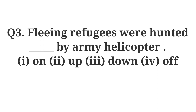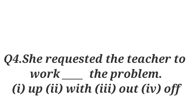Question number three: The fleeing refugees were hunted dash by army helicopters. Options are: on, up, down, off. You should do the test quickly, noting your answers on paper. The answer is given here.